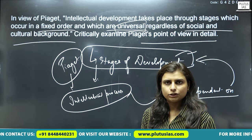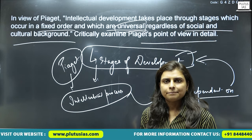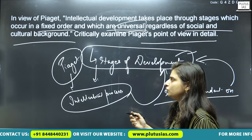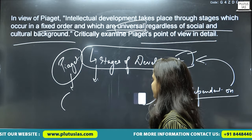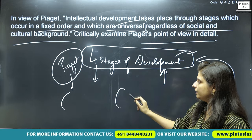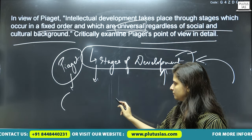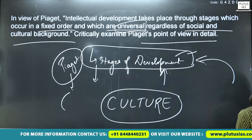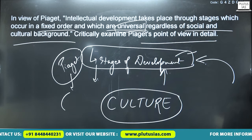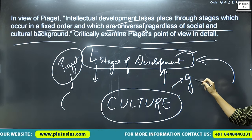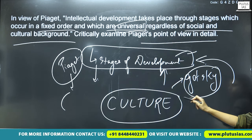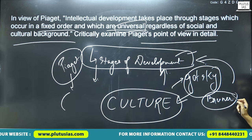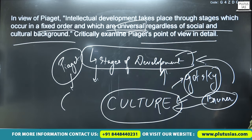Other psychologists have critically examined this and argued that many more factors play into intellectual development. For example, a person's experiences help intellectual development. Culture also plays a big role — you can write about Vygotsky's theory, which focuses on the cultural aspect, and also about Bruner.